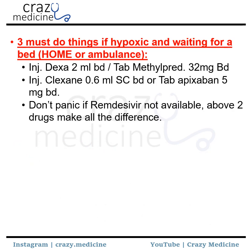Then, three must-do things if the patient is hypoxic or waiting for a bed at home or in an ambulance. Injection dexamethasone 2 ml BD or tablet methylprednisolone 32 mg BD can be given if the patient is waiting for admission. Anticoagulation must be given, which can include injection enoxaparin or novel anticoagulants like apixaban. Don't panic if remdesivir is not available — the above two drugs make all the difference.